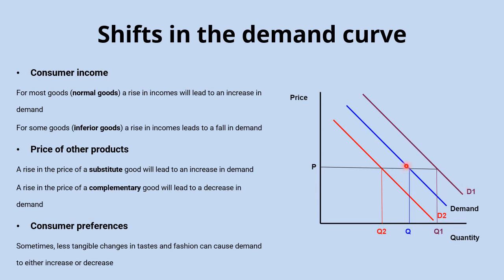The same is true in reverse: any factor that causes demand to decrease is going to shift the whole curve leftwards. For example, a decrease in the price of a substitute good will cause, at any given price, the entire demand curve to shift to the left — at price P you'd now have Q2 demanded rather than Q, and this is true across all price points on the demand curve.